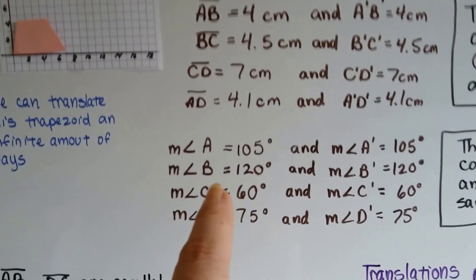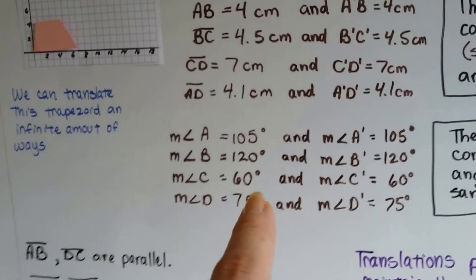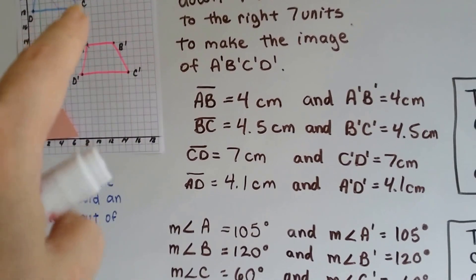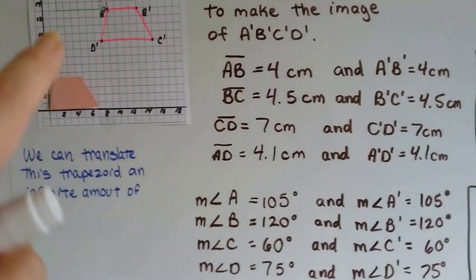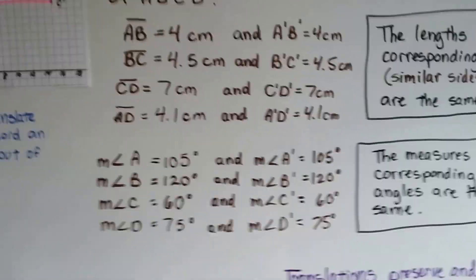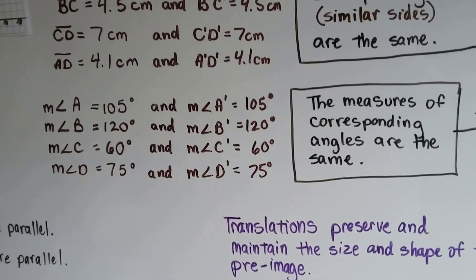The measure of angle B is 120, and the measure of angle B prime is 120. Measure of angle C is 60, and the measure of angle C prime is 60. The measure of angle D is 75, and the measure of D prime is 75.